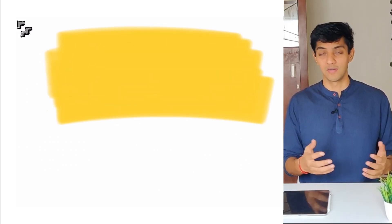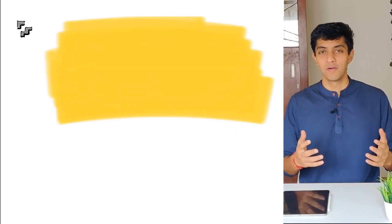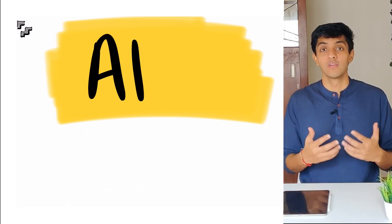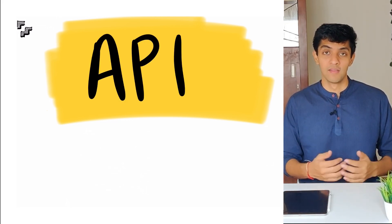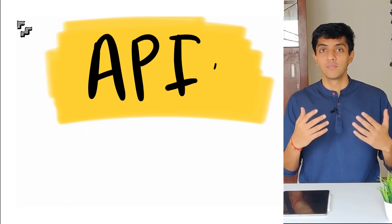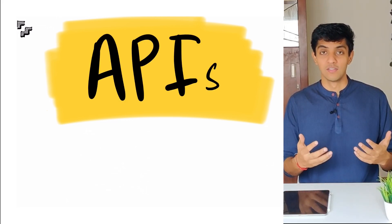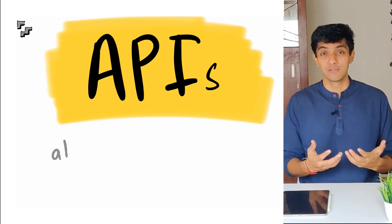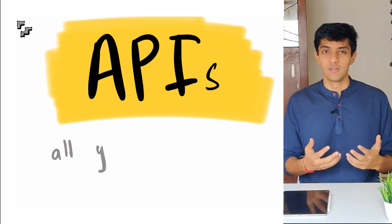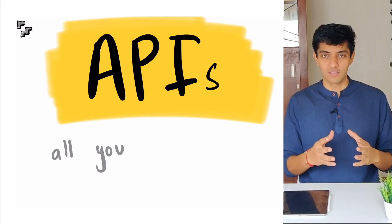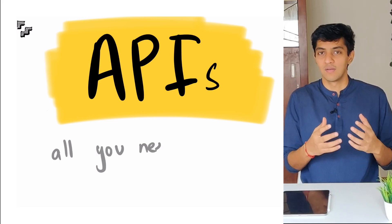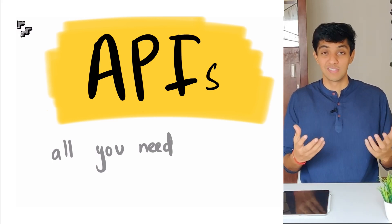If you aim to get into the product team of your organization, or if you're currently in the product team, then a big part of your daily job is to communicate with your engineering team. In order to communicate well, you need to know the basics of technology to ensure that you're not lost and you understand what the engineering team says.